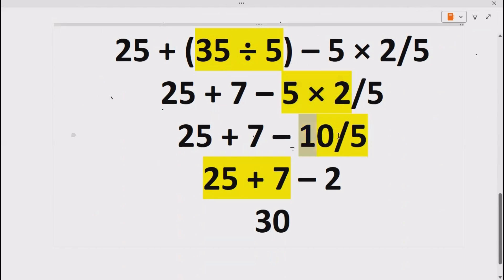And then after that we have to do a division according to BODMAS or PEMDAS. So 10 divided by 5 gives us 2.